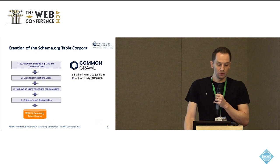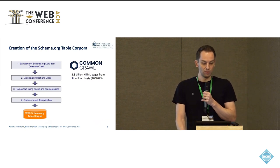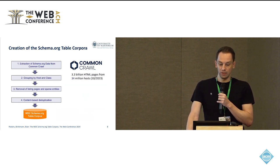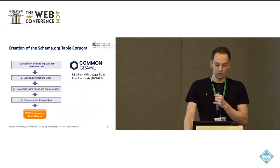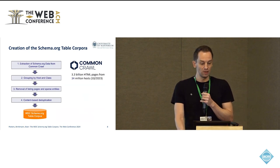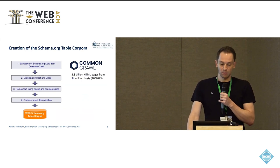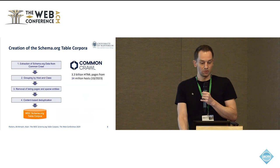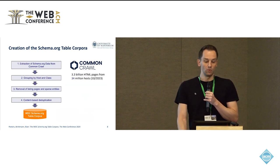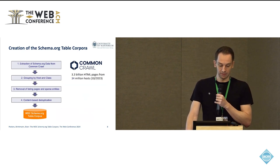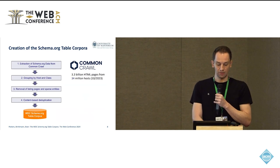What we are doing is using these annotations. More specifically, we start with the Common Crawl, which is a large monthly crawl of the internet. In the example of the 2023 table corpus, we use the Common Crawl from October 2023, which contains 3.3 billion HTML pages from 34 million hosts. Then we have a four-step process to create our corpora: first we extract the data from the Common Crawl, then we group the data by host and entity class, and these two steps are followed by two cleansing steps, which then result in our final corpora.